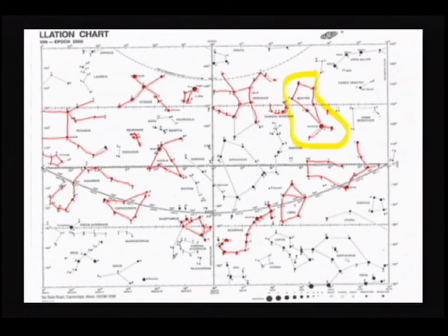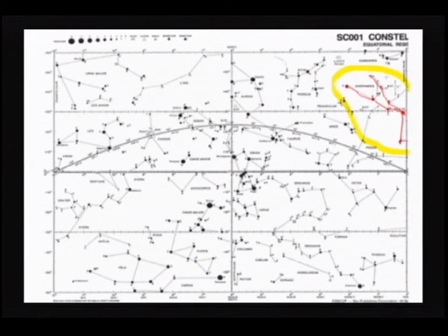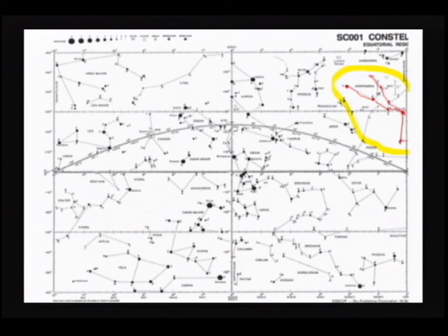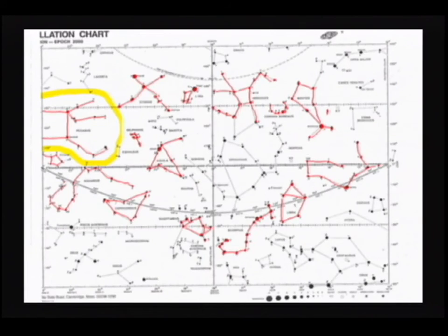Then the next constellation is Boötes, which looks like a big kite in the sky — a bright star at the bottom with two strings hanging down. Really easy to find. Going back to Pegasus, coming off the top of the square heading back to the left is the constellation Andromeda. Andromeda is actually Cassiopeia's daughter — she's on the flying horse and what you see is her hair flying out behind her. Andromeda is also pretty easy to find.